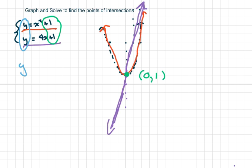We set y equals y because that's true. The first y is x² + 1 and the second y is 4x + 1. Now since it's quadratic,